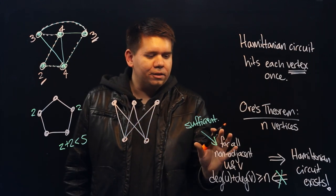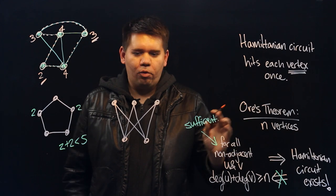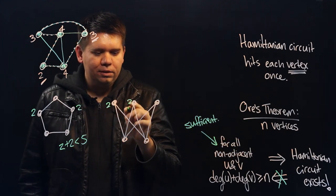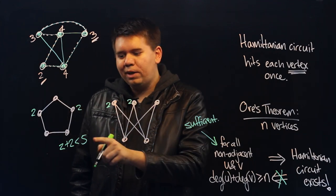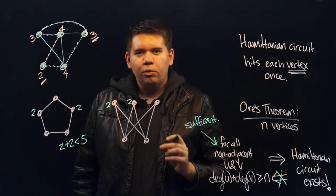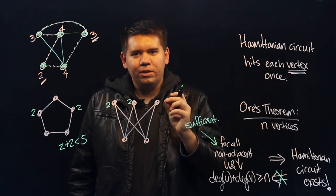Does there exist a Hamiltonian circuit? Again, we don't satisfy the sufficient condition of Ore's theorem, because you can look at these two vertices, each has degree 2. So again, 2 plus 2 is less than 5, and we don't meet this condition. So we may need a more clever argument.